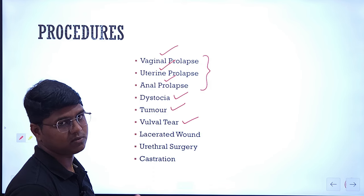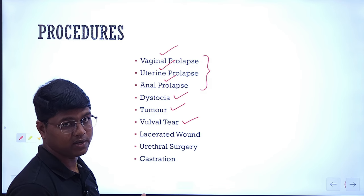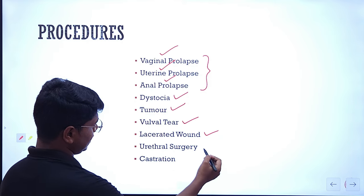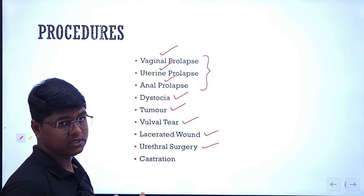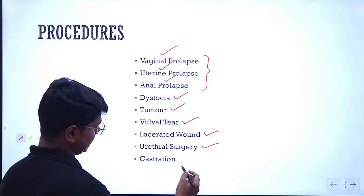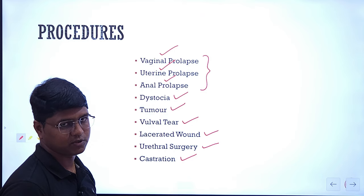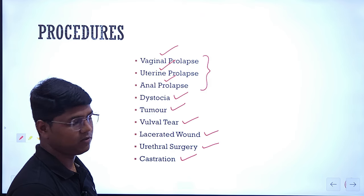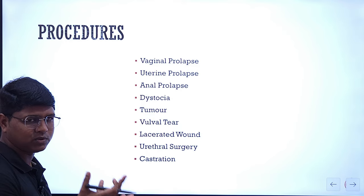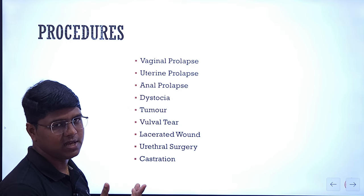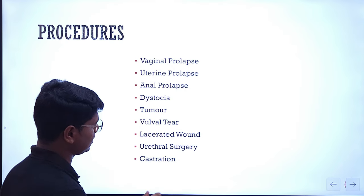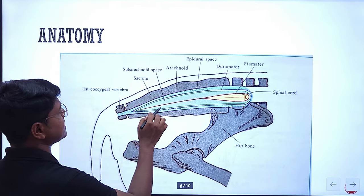Lacerated wounds, urethral surgery — if you are doing urethrotomy or urethrostomy in male animals — and castration in case of males. You can use epidural anesthesia for these procedures. Apart from that, anything involving those particular areas — tail, anus, perineum, and the caudal udder — for those areas you need epidural anesthesia.